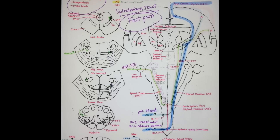It's the same pathway for your arm and posterior one-third of the head: synapses at your RL1 and RL2, your two nuclei, crosses your anterior white commissure, ascends contralaterally through your spinothalamic tract, synapses at your VPL, goes through your PLIC, and then synapses once more at your postcentral gyrus.